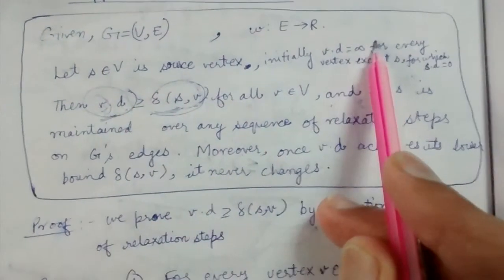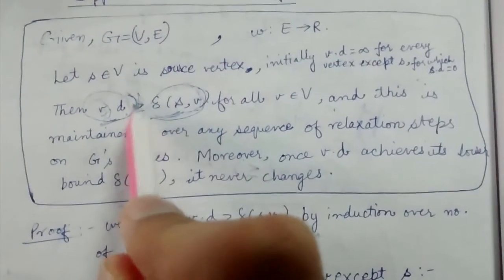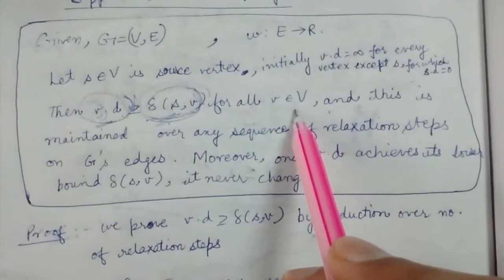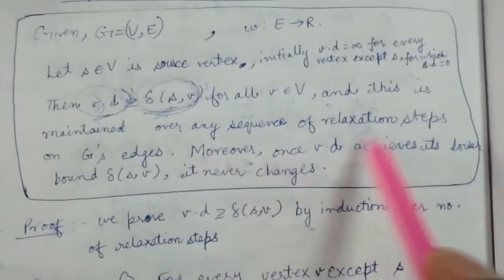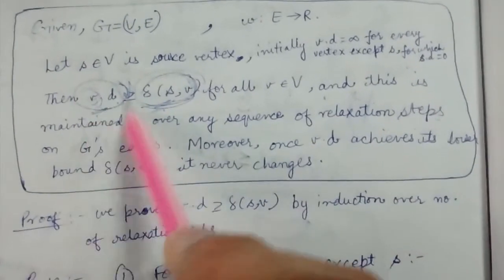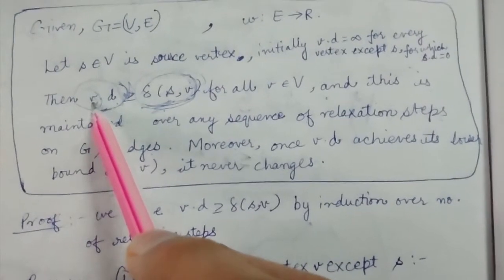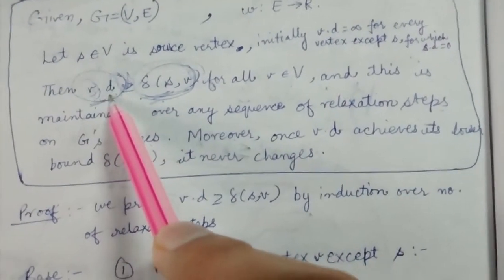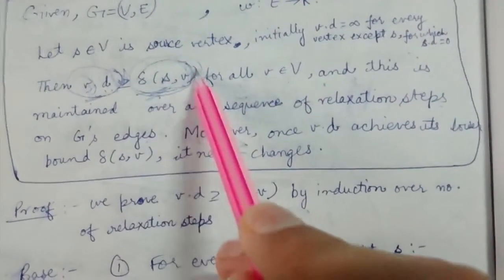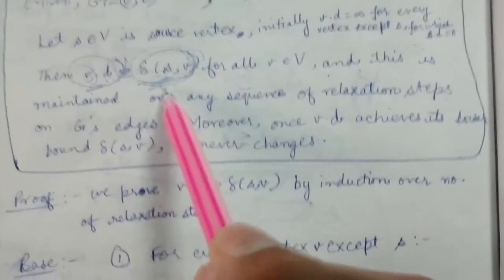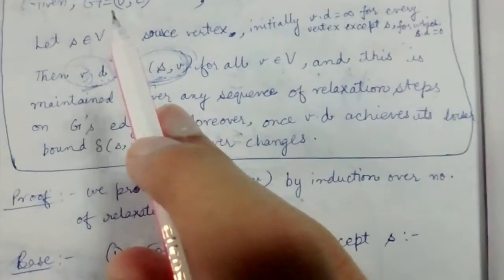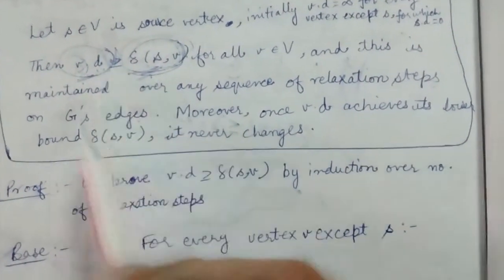v.d is initially infinity. We keep on decreasing it, and we try to reach the final actual information. This is maintained for all v belonging to V, over any sequence of relaxation steps on the graph's edges. The current information v has about its distance from s is never smaller than the actual distance — it can be more, but it is never less than the actual distance.